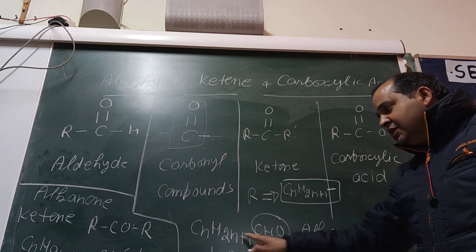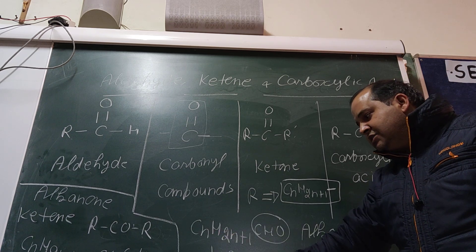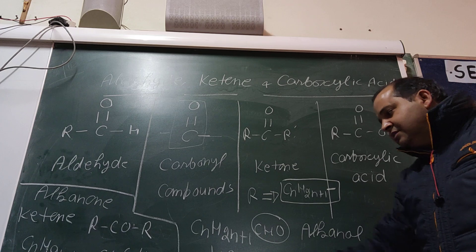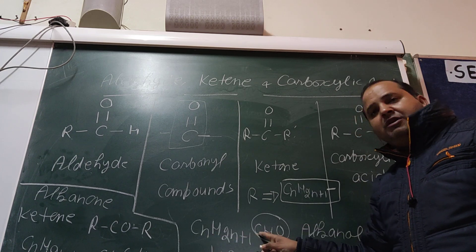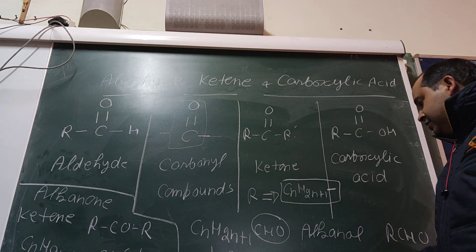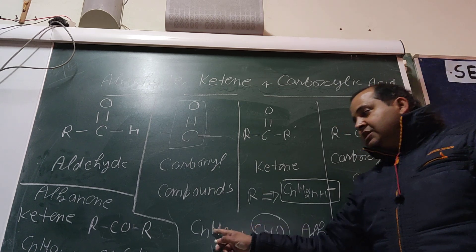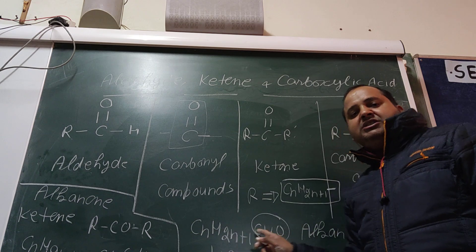If n value is two, then it will be CH3-CH2-CHO: propanal. Or if in place of R there is benzene, that is called benzaldehyde.